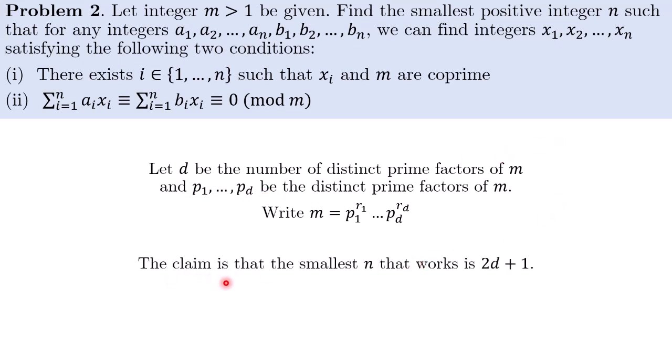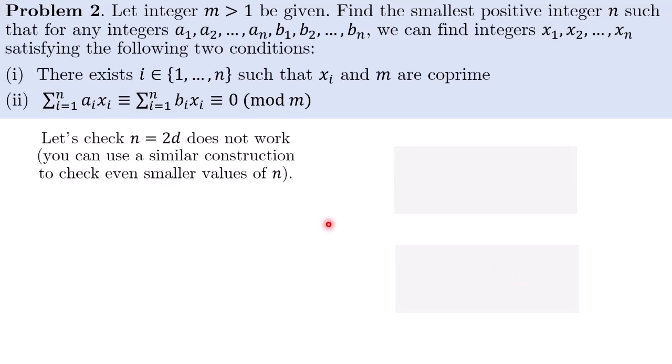For condition 1, it is saying that there exists some index i such that xi is not divisible by any of the primes p1 to pd. For the solution, I will prove that the smallest n that works is 2d plus 1. This may still seem a bit random, but the reason for this will become much more intuitive after the next slide. So on this slide, what I will show is that n equals 2d does not work. You can use a similar construction to check even smaller values of n, but I will not go over the details.